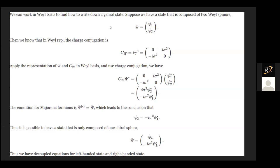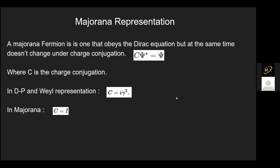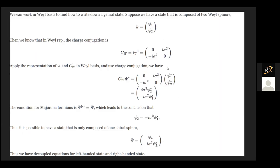We can start by proving this. Using the Weyl representation, the charge conjugation is i times gamma-0 (where gamma-0 is beta). If you apply the representation and use charge conjugation, you get Psi-2 equals minus-i sigma-2 Psi-star-1. So the normal Psi operator, instead of being Psi-L and Psi-R, would be Psi-L and minus-i sigma-2 Psi-star-L. Thus we have decoupled equations for left and right-handed states.